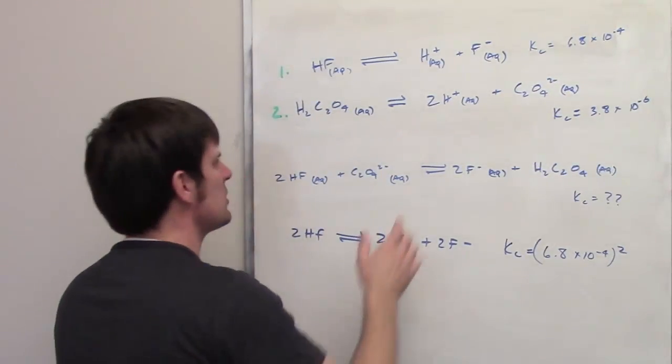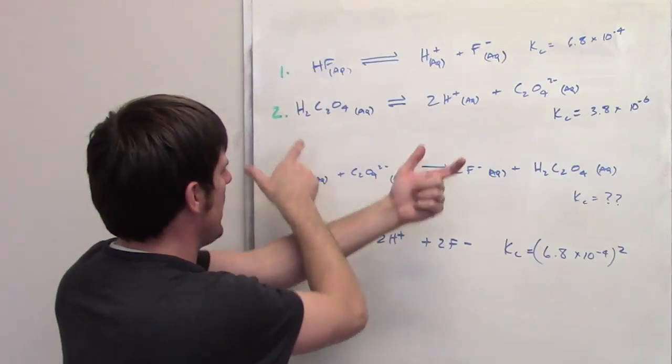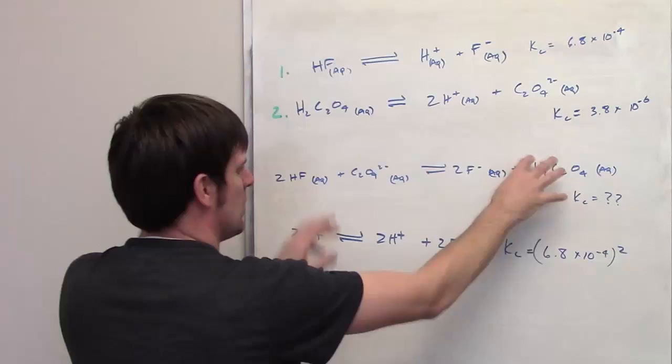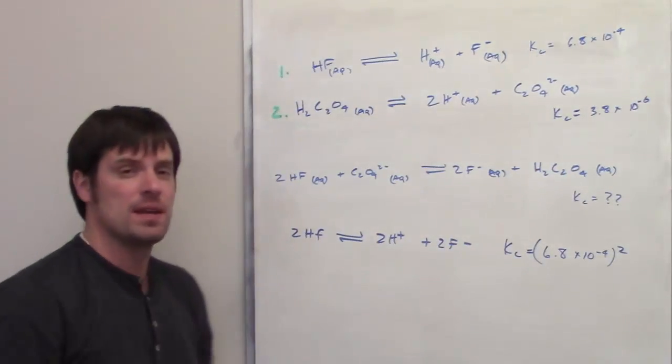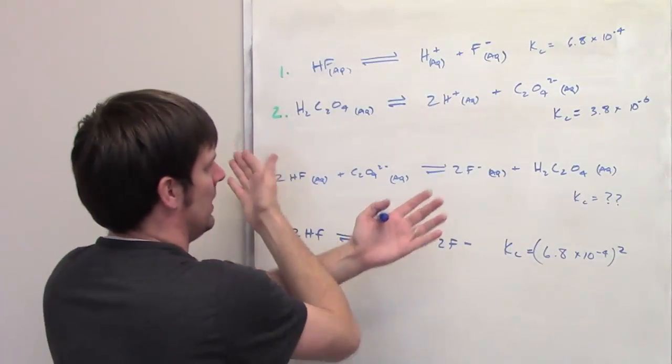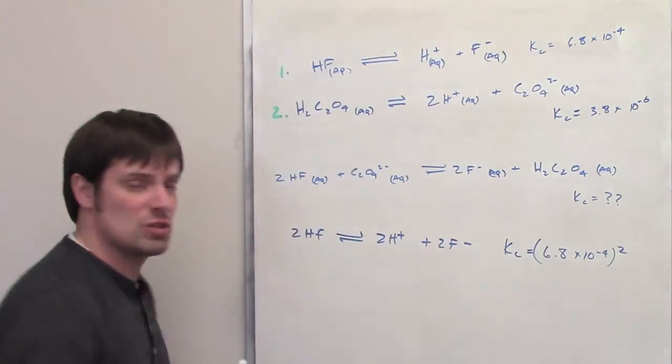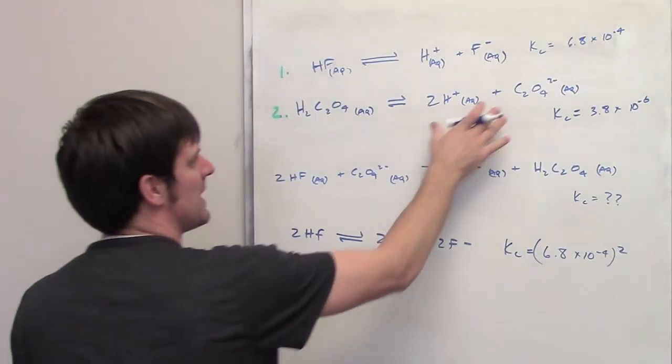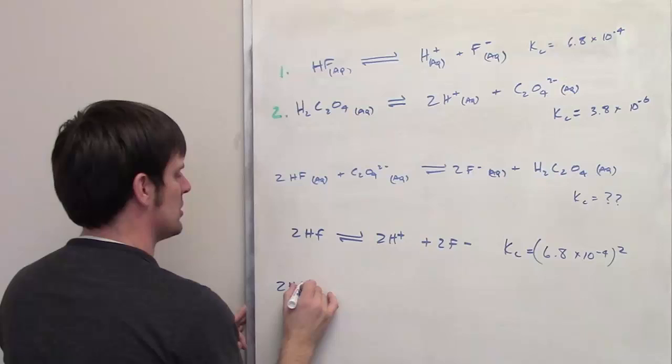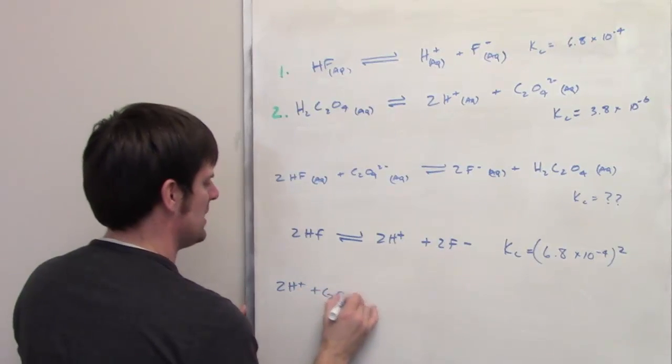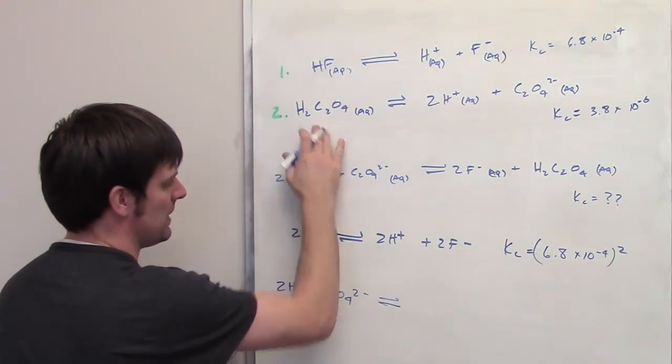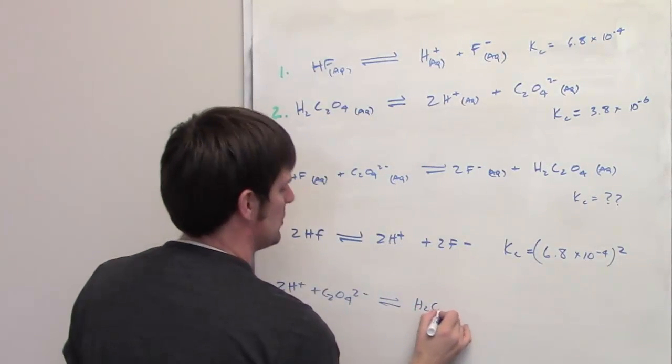So if I could somehow just take this and flip it around, I would be able to get what I've got going on here. Can I do that? I absolutely can, because this is an equilibrium reaction. You can flip it around, no problem, because really it is a two-way reaction. So I'm going to take everything that's on the right here, I'll put it down here on the left, which is 2H pluses plus C2O4 2 minus, and then this thing that's on the left up here is going to go on the right, H2C2O4.